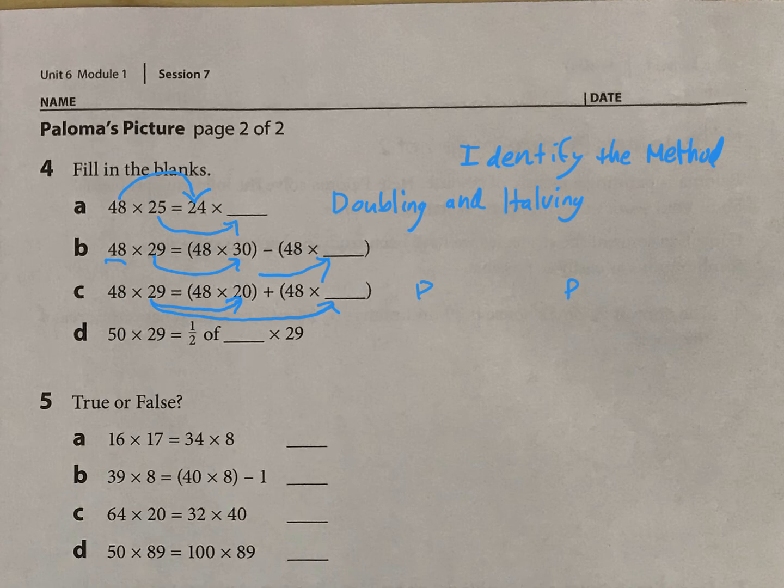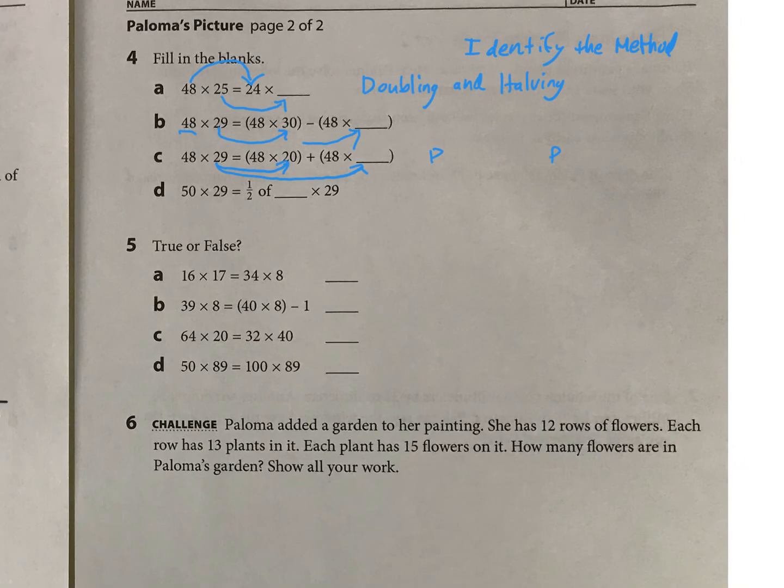And then down here, same thing, you're doing true or false, but you can still figure out the method that they're trying to use here. You have 16 would double to 34, but they didn't do their doubling and halving correctly there, so that one would be false. And then just use the methods you've identified to see if those are true or false.